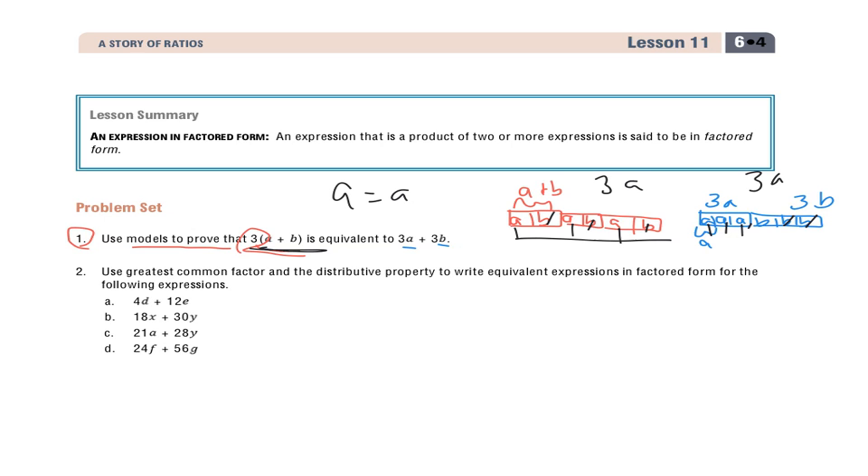So let's take a look down at number 2. And we're going to look first at A, and it's 4D plus 12E. And we see that our directions say, use greatest common factor and the distributive property to write equivalent expressions in factored form for the following expressions.